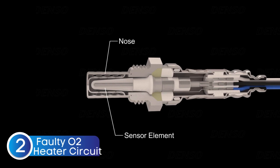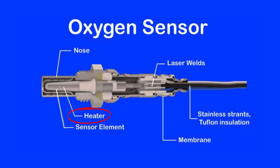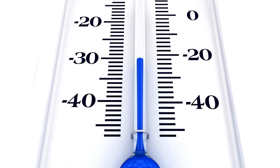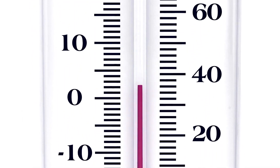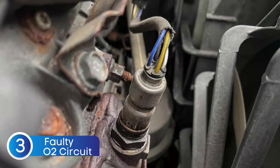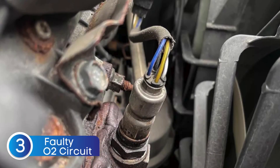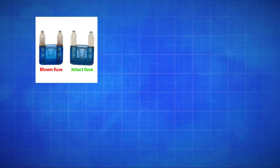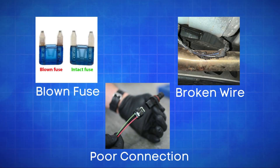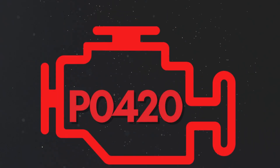The next cause is a faulty oxygen sensor heater circuit. Oxygen sensors need to reach a specific temperature to work effectively, which is why many have an integrated heater. A faulty heater circuit can prevent the sensor from reaching optimal operating temperature, resulting in incorrect readings. The third cause is defective sensor wiring or circuit problems. Issues like a blown fuse, broken wires, or poor connections in the oxygen sensor circuit can disrupt the signal to the ECU, causing the P0420 code.